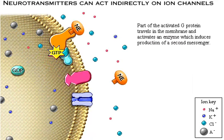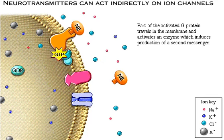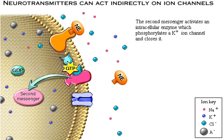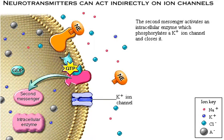Part of the activated G-protein travels along the membrane and activates an enzyme, which induces production of a second messenger. The neurotransmitter is the first messenger. The second messenger activates an intracellular enzyme, which phosphorylates a potassium ion channel and closes it.